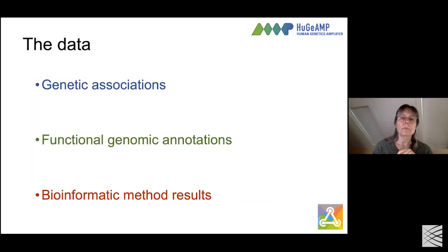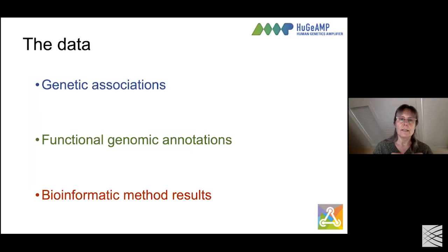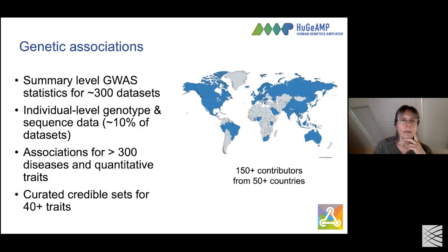Just a couple weeks ago we soft launched a new portal for lung disease in collaboration with Michael Cho and Benjamin Raby. Although these portals are separate with disease community-specific content, the data they access is all in one big pot - any portal can access any data if we set it to do that. There are basically three types of data: genetic association data, functional genomic annotations, and the results of bioinformatic methods.